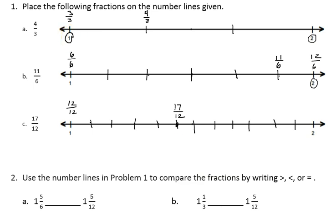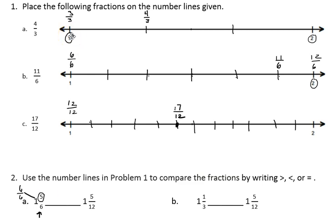Now to compare my fractions for problem 2, they've been written as mixed numerals. If I have 1 and 5 sixths, that's the same thing as 11 sixths, because the 1 is 6 sixths — combine that with my 5 sixths and I get 11 sixths. So 11 sixths was this point on the number line. I'm comparing that to 1 and 5 twelfths. Again, 1 is 12 twelfths, so 1 and 5 twelfths is the same as 17 twelfths. 17 twelfths is closer to 0 than 11 sixths, so 17 twelfths is smaller. In other words, 1 and 5 sixths is greater than 1 and 5 twelfths.